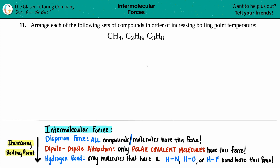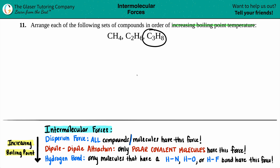Number 11. Arrange each of the following sets of compounds in order of increasing boiling point temperature. We have CH4, which is methane, C2H6, which is ethane, and C3H8, which is propane.